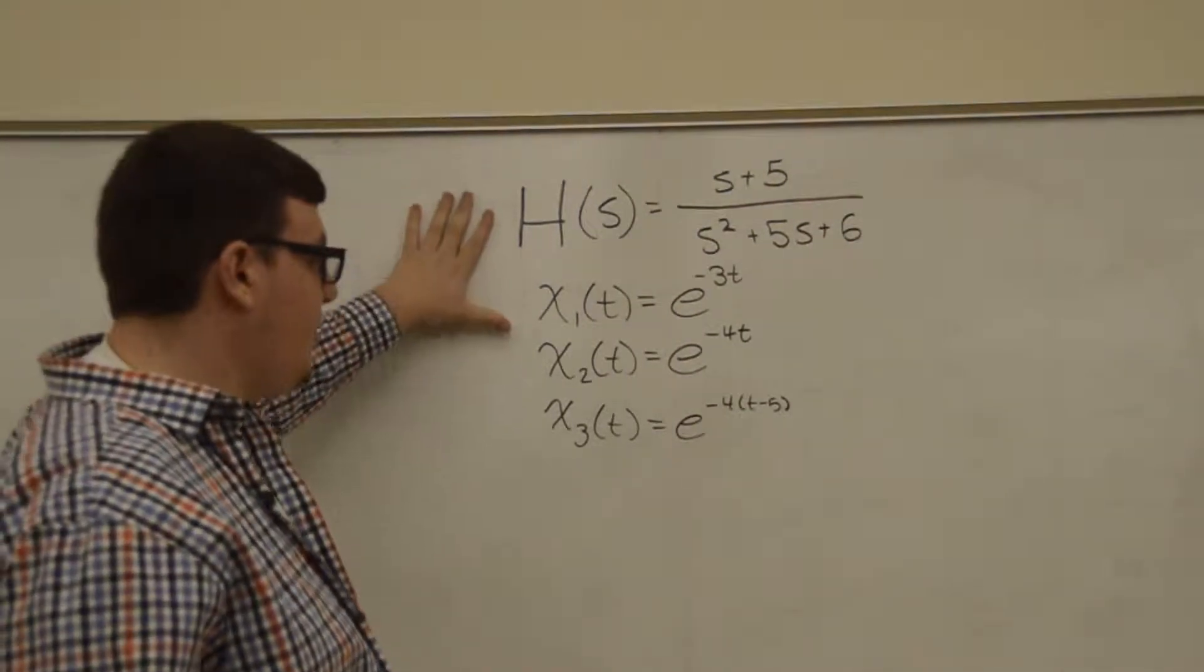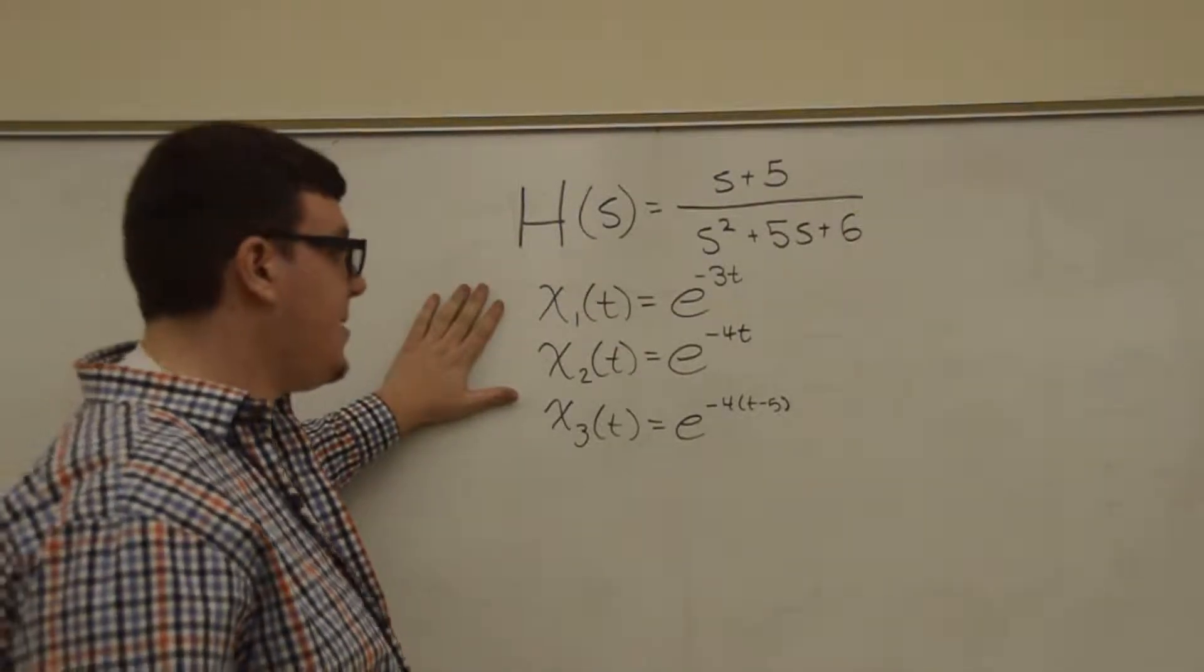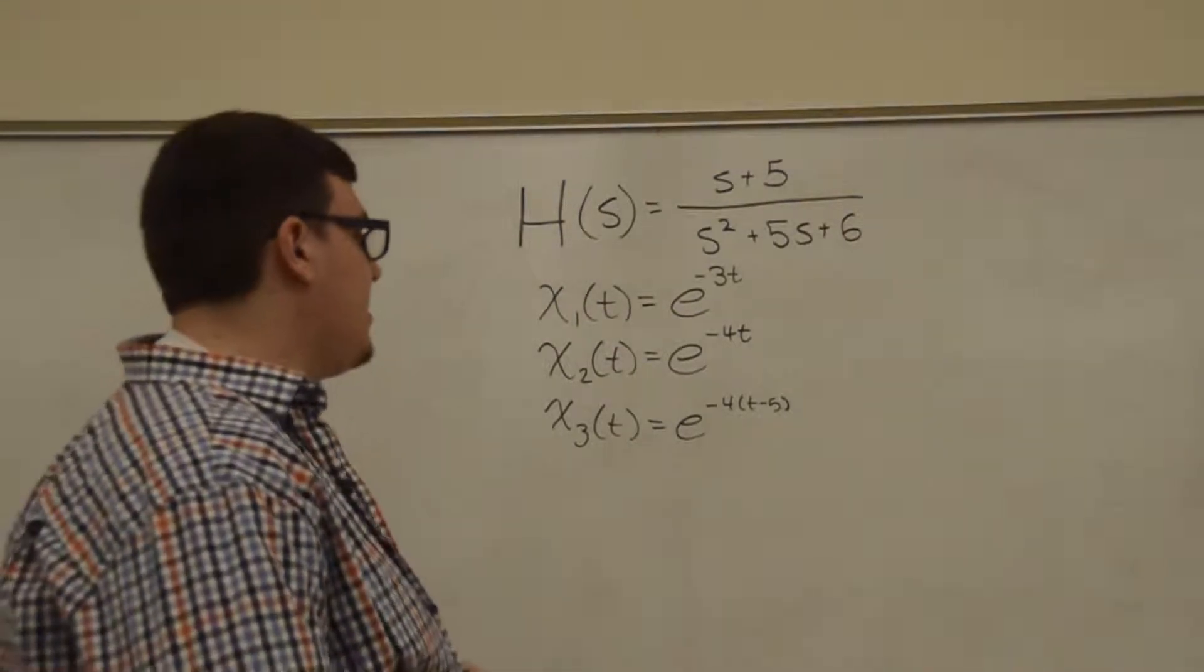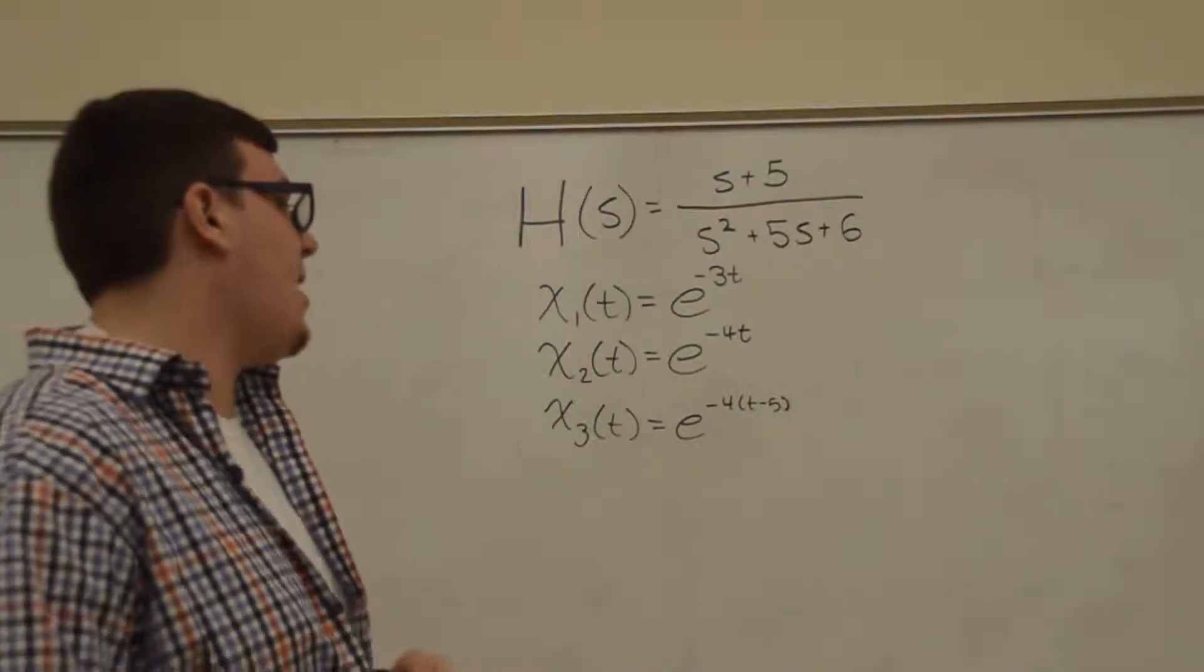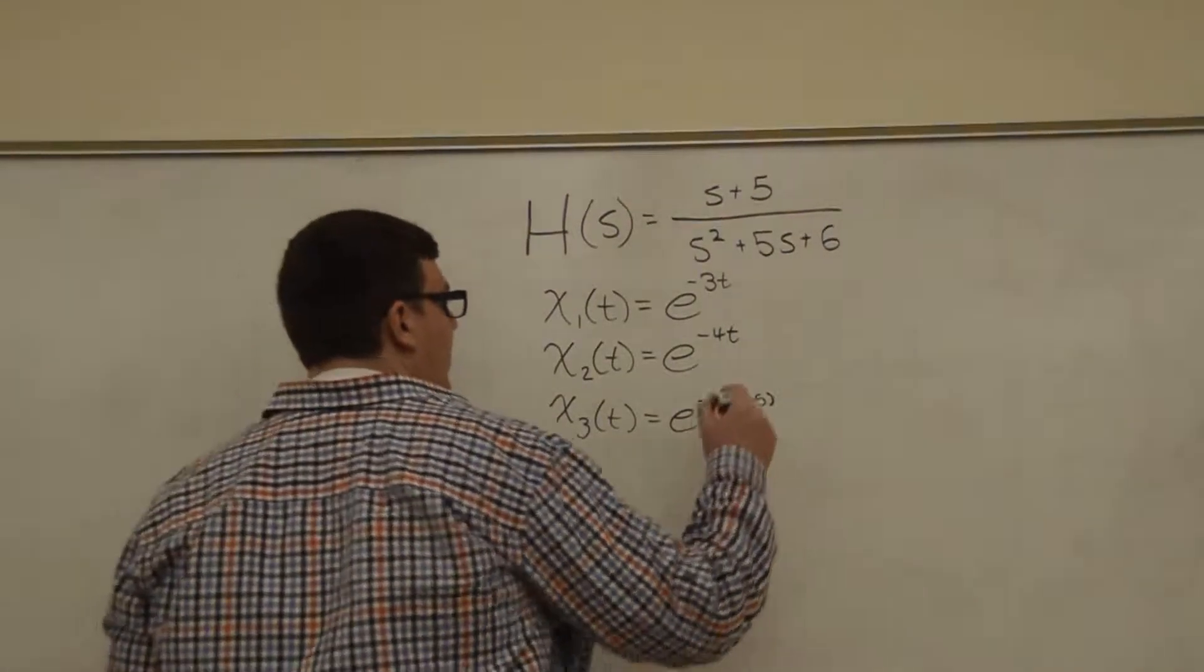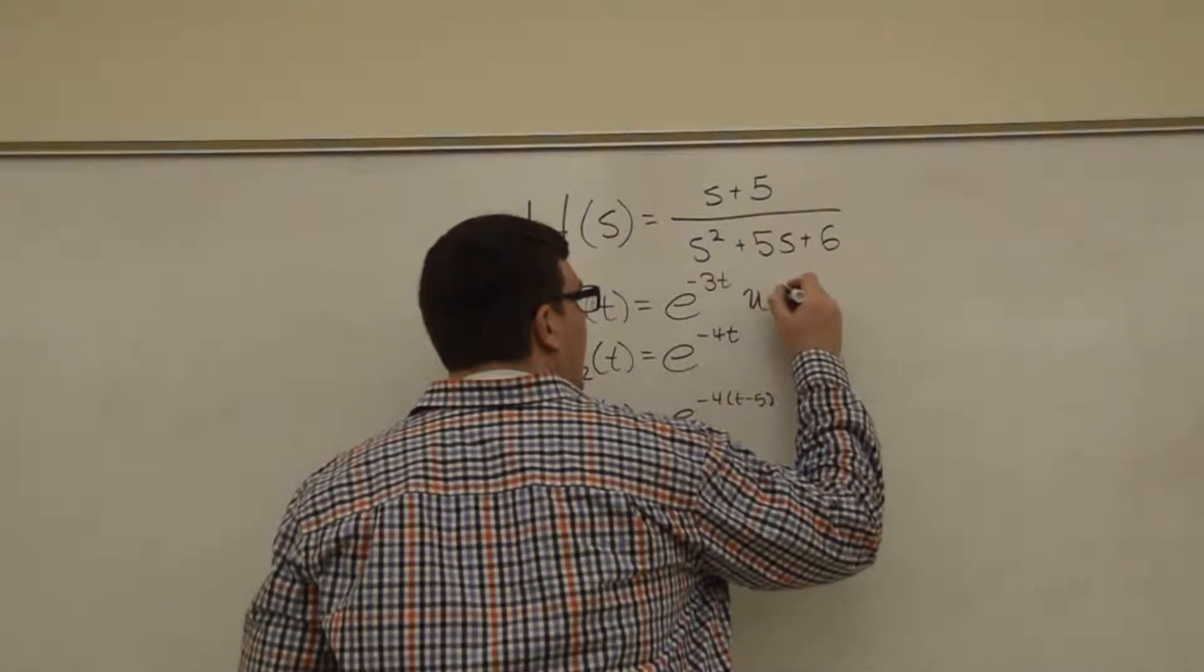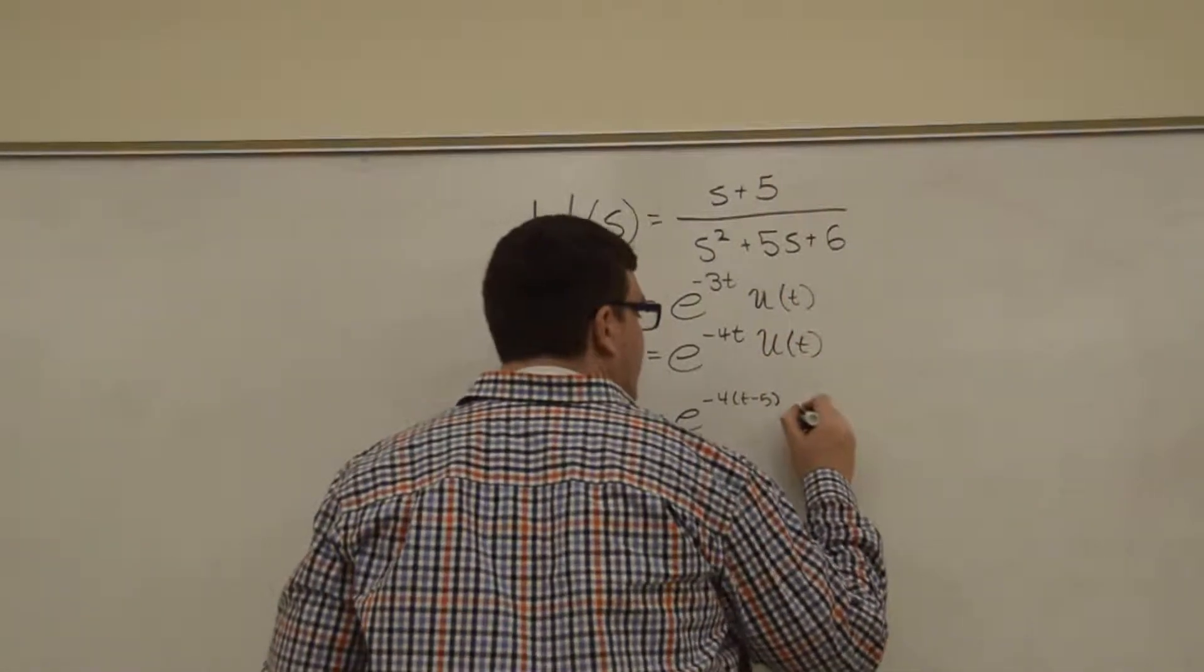find the output for these three inputs. The inputs are x₁(t) = e^(-3t), x₂(t) = e^(-4t), and x₃(t) = e^(-4(t-5)). And we're assuming that all of these are 0 before time equals 0.